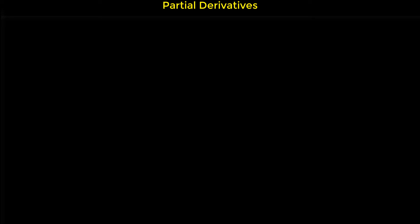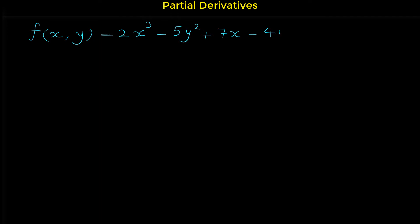In this video I'm going to show you how we can find the partial derivatives of multivariable functions. Consider this function f of x and y equals 2x to the power of 3 minus 5y squared plus 7x minus 4y plus 13. This function has two variables — x and y — and so we can find the partial derivatives with respect to x and with respect to y.